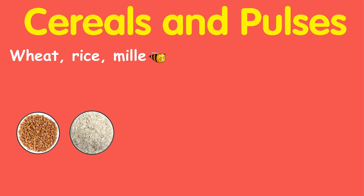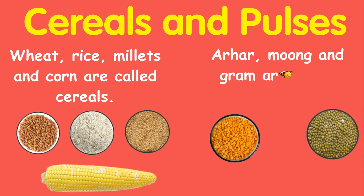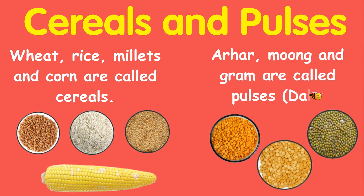Wheat, rice, millet and corn are called cereals. Arhar, moong and gram are called pulses. Pulses are commonly known as dal.